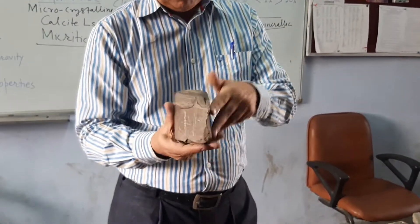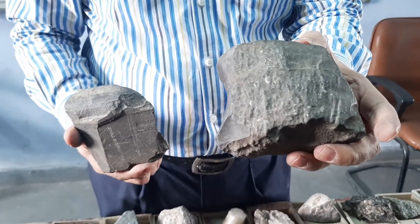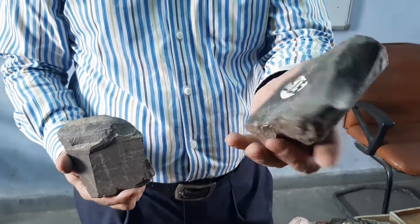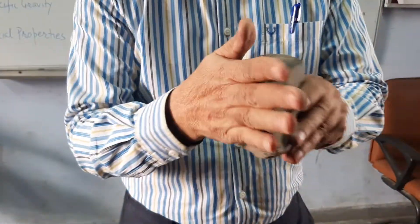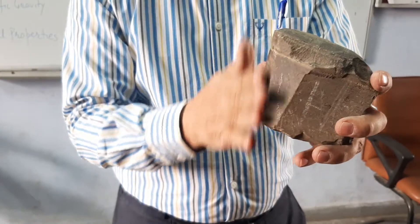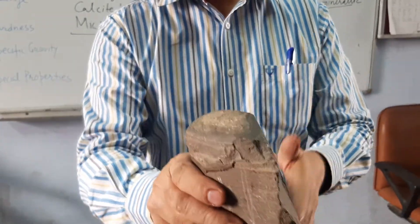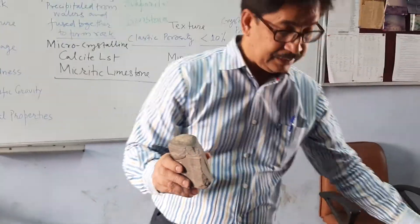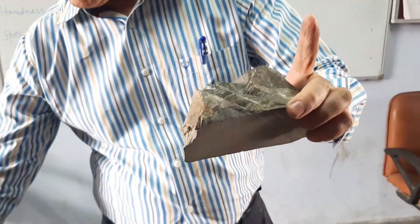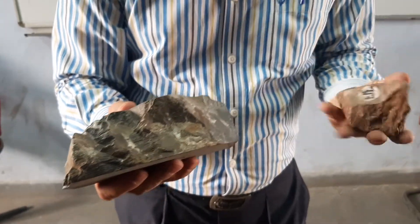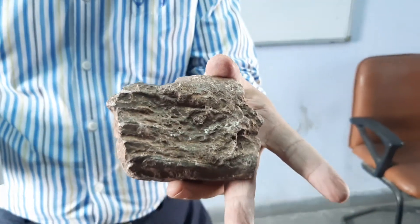Sometimes shells may dominate, sometimes the microcrystalline calcite may dominate. Then we have a very big group of limestone called micritic limestone. You can see this surface is rough because it was exposed to the atmosphere and has undergone weathering, while this is the freshly broken surface. This sample has very even surfaces because these were the joints — one set, another set, another set. We have taken out this sample along the joints. This is again microcrystalline calcite limestone; this one is brown-colored micritic limestone.